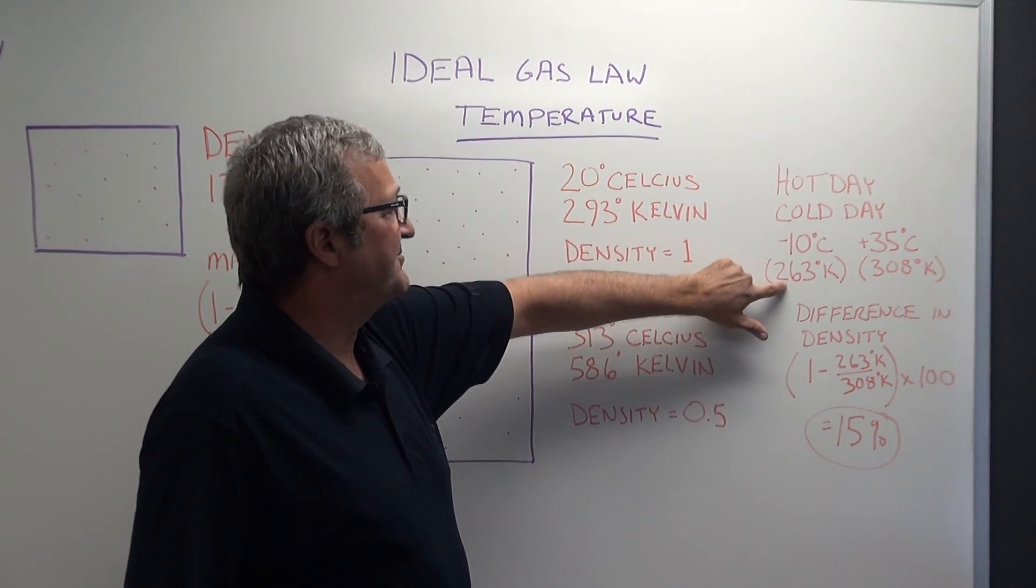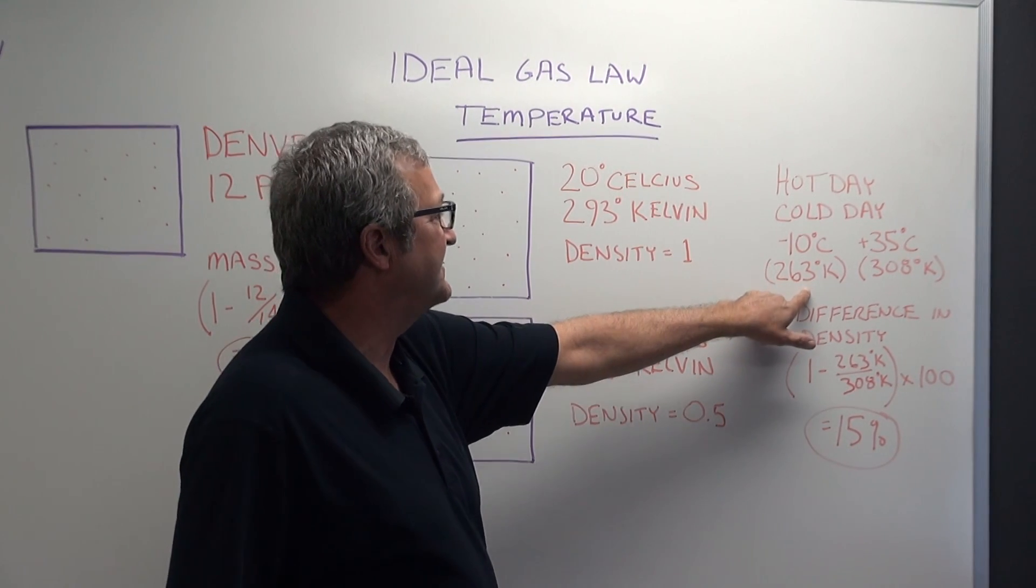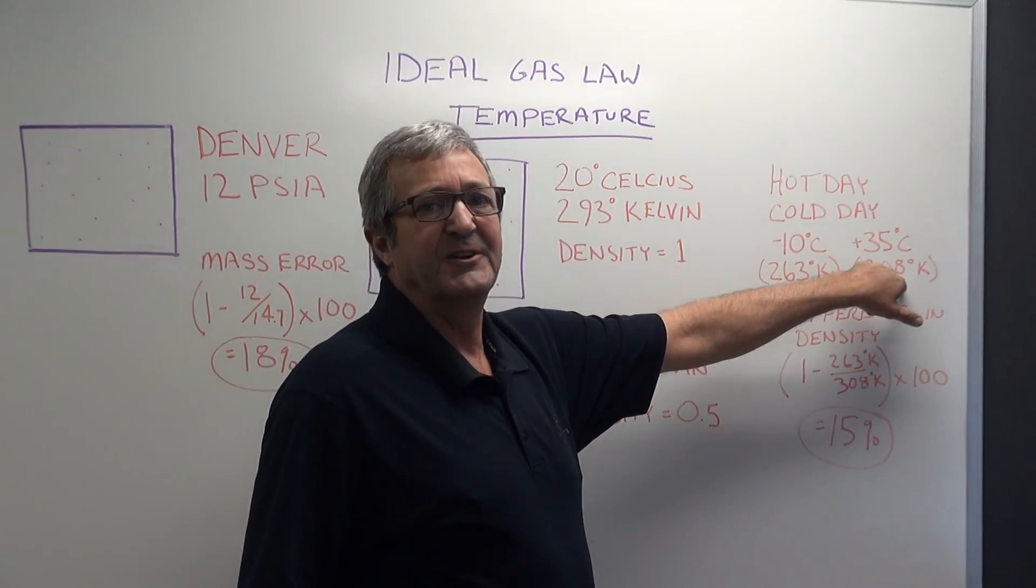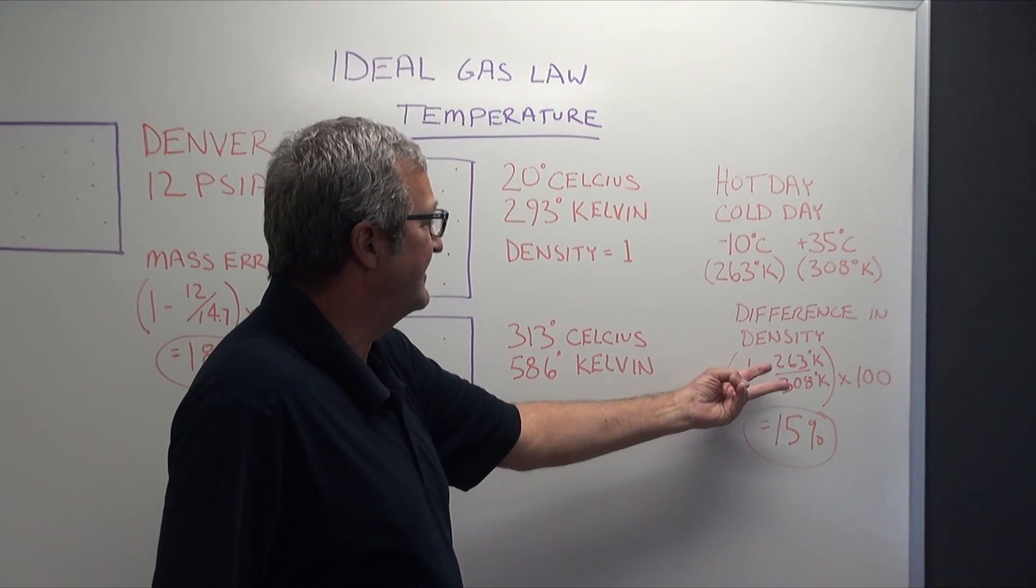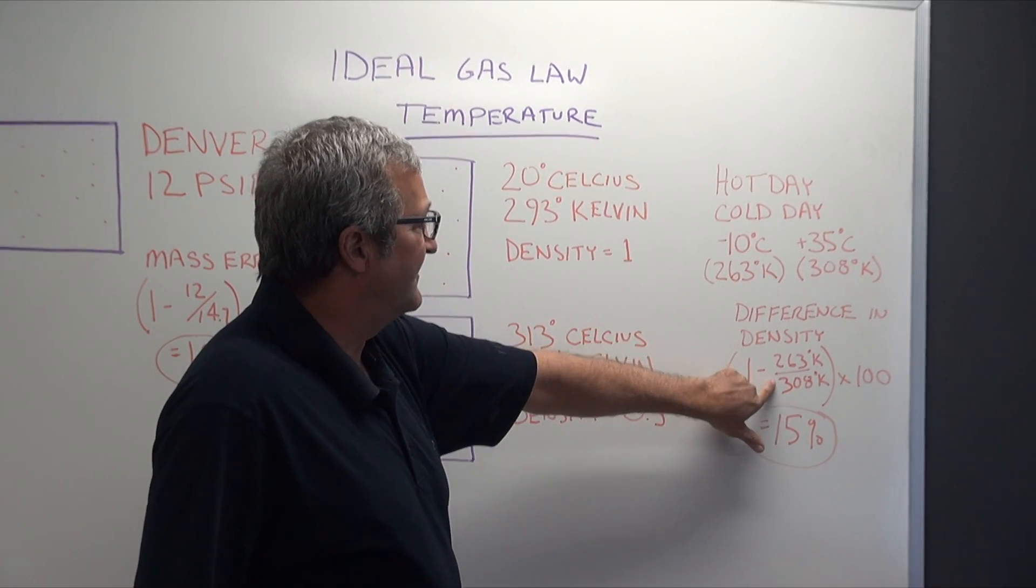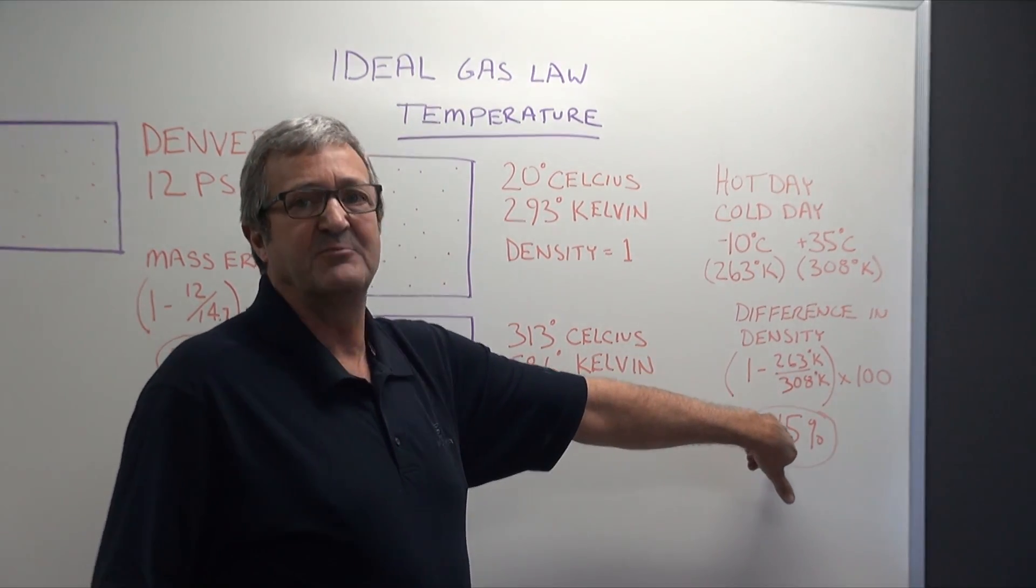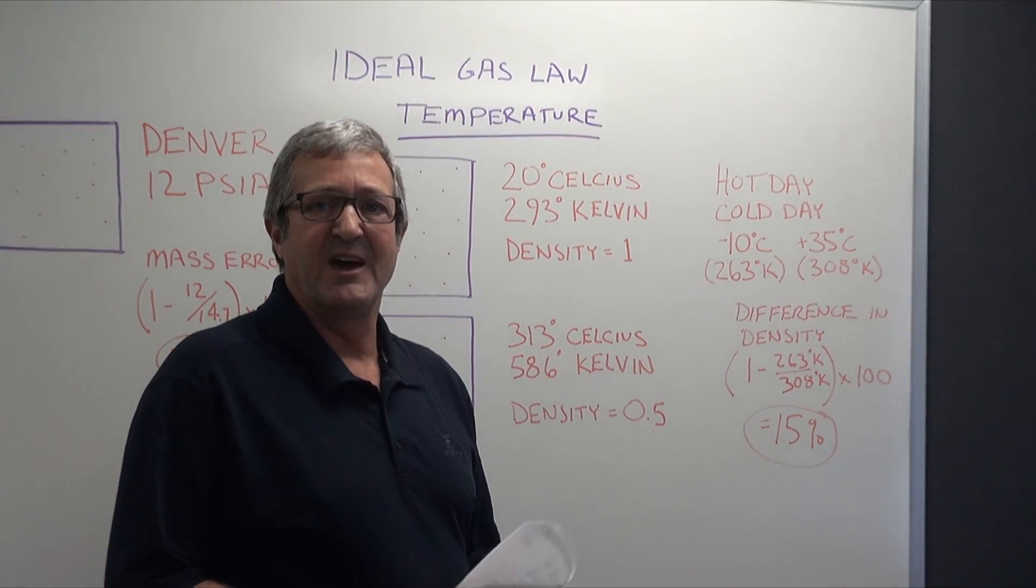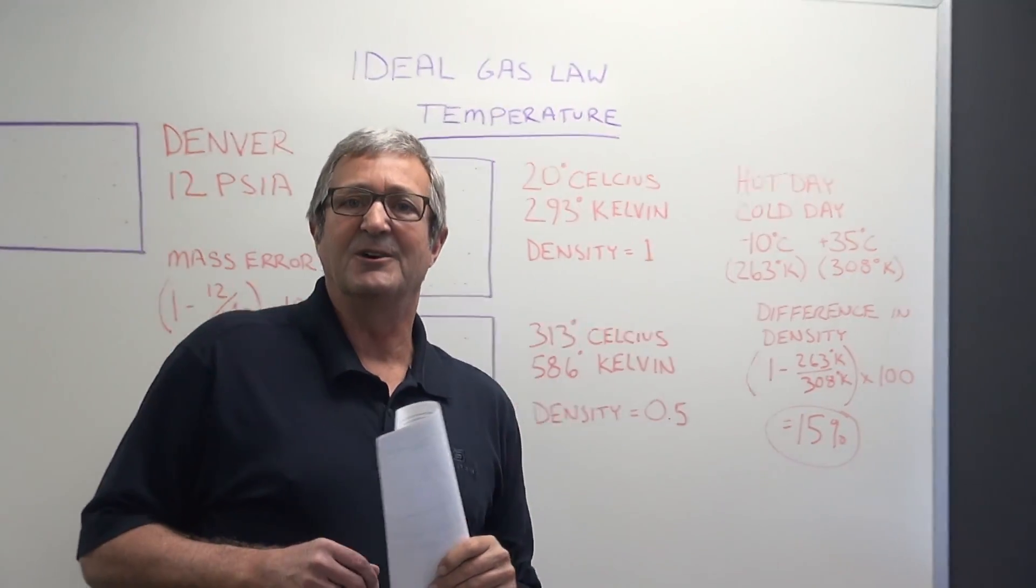We need to convert these temperatures back to Kelvin again, so here's our two absolute temperatures. It's going from 263 Kelvin to 308 degrees Kelvin. Similar equation to the pressure, only the numbers are flipped over. So in this case we have the 263 Kelvin divided by the 308 Kelvin, that's going to be minus 1 times 100 to give us a 15 percent change in mass flow just based on a seasonal change in a place like Iowa.